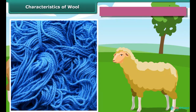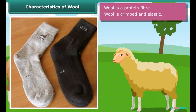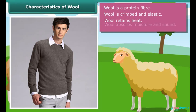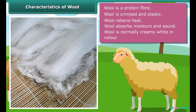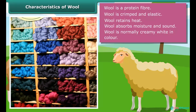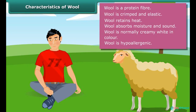Wool is a protein fiber. It is crimped and elastic. The crimp makes wool bulky and helps it retain heat. Wool absorbs moisture and sound because it is hollow. Wool is normally creamy white in color, but it can also be black, brown, or silver. Wool is hypoallergenic — in other words, it causes fewer allergies in human beings.